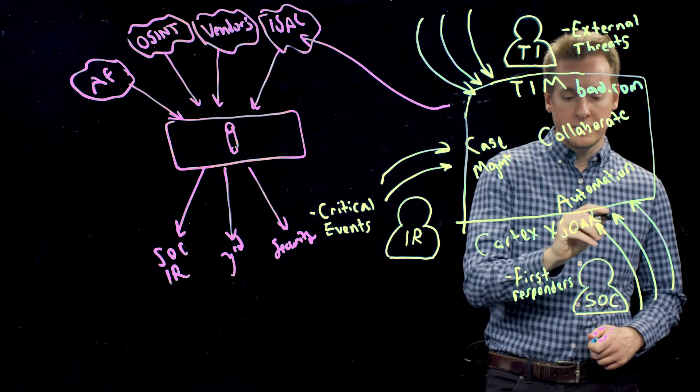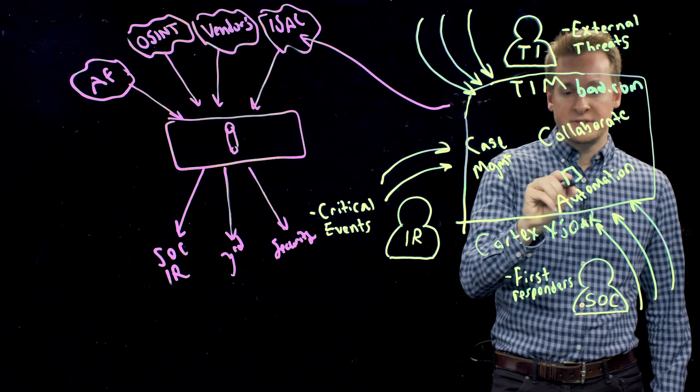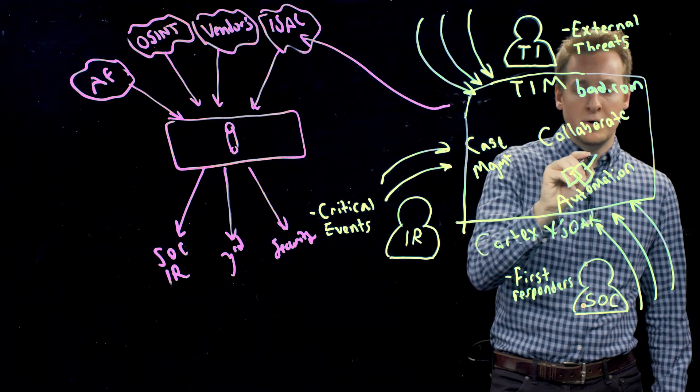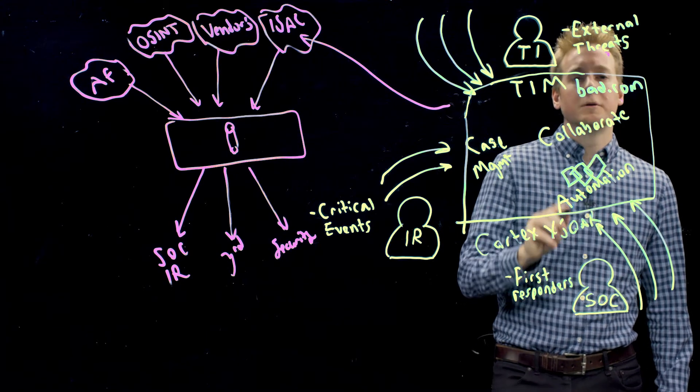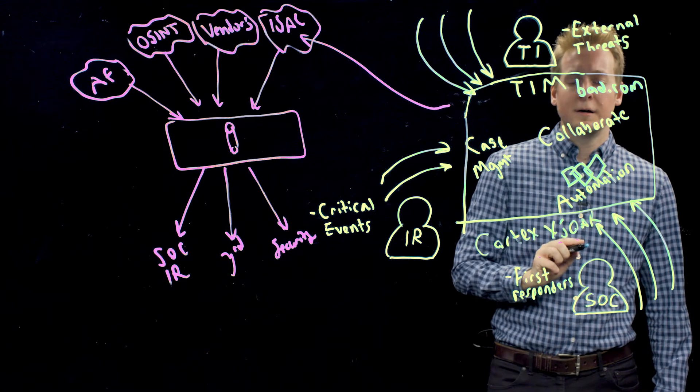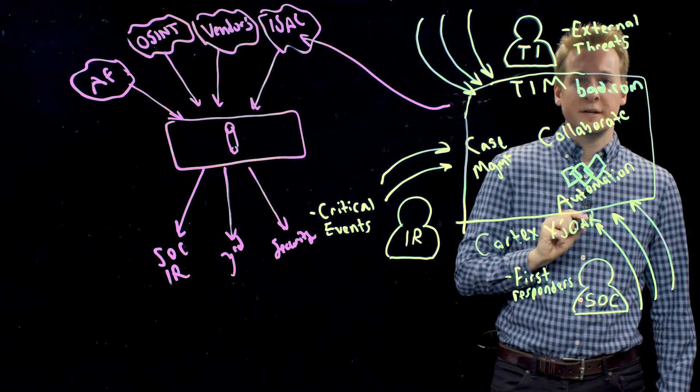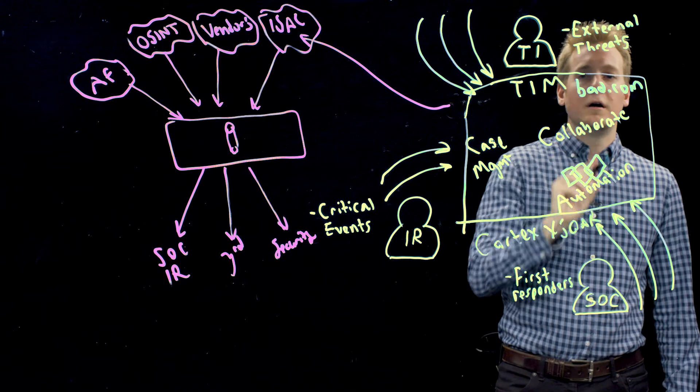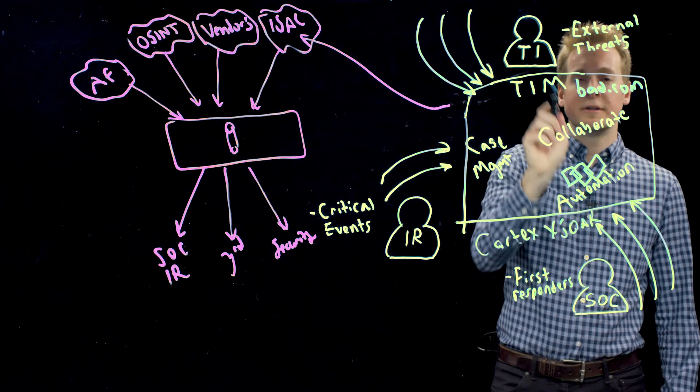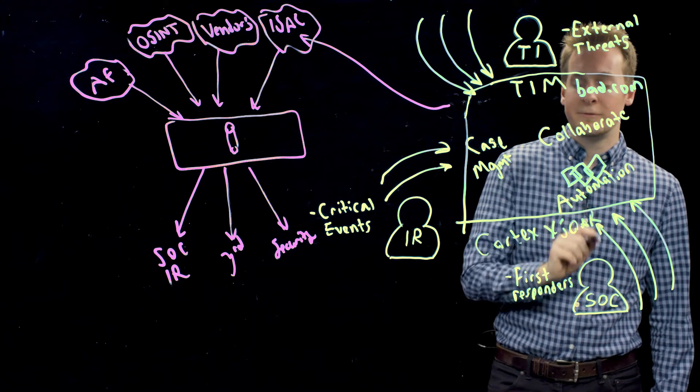Now a week later, the security operations team is responding to multiple disparate events which involve bad.com. Right there in the ticket, they are going to see all of the intelligence and related information that the threat intel team provided a week before.